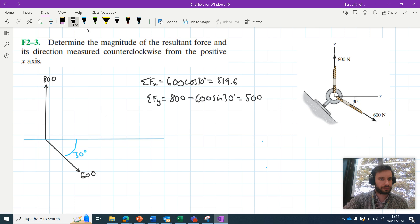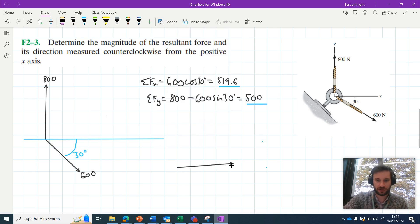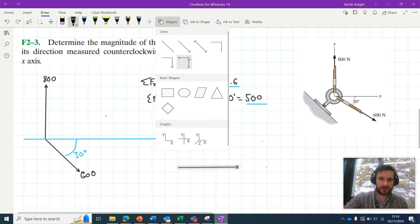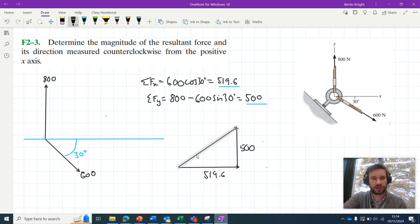So what do these values actually mean? Well, this is describing the horizontal component of the resultant force, and this 500 is describing the vertical component of the resultant force. We could sketch this—it's acting 519.6 to the right and 500 up. So 500 up, 519.6 across. And we can say then that the magnitude of the resultant force is given by this hypotenuse here.